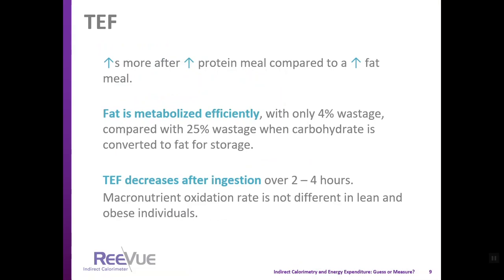The thermic effect of food is increased more with a high-protein meal compared to a high-fat meal, but it's still within this 10% increase above resting metabolic rate. Fat is metabolized efficiently with only 4% wastage compared to about 25% wastage when carbohydrate is converted to fat for storage. TEF decreases after ingestion over 2 to 4 hours depending on meal size — a 300-calorie meal may complete its effect in 2–3 hours, while a higher-energy meal may take 4 hours or more.